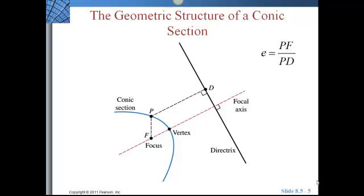So here's the geometric structure of a conic section. We have a basic conic section here. It could be hyperbola, parabola, part of an ellipse. It's got the vertex, it's got the focus, it's got our directrix.